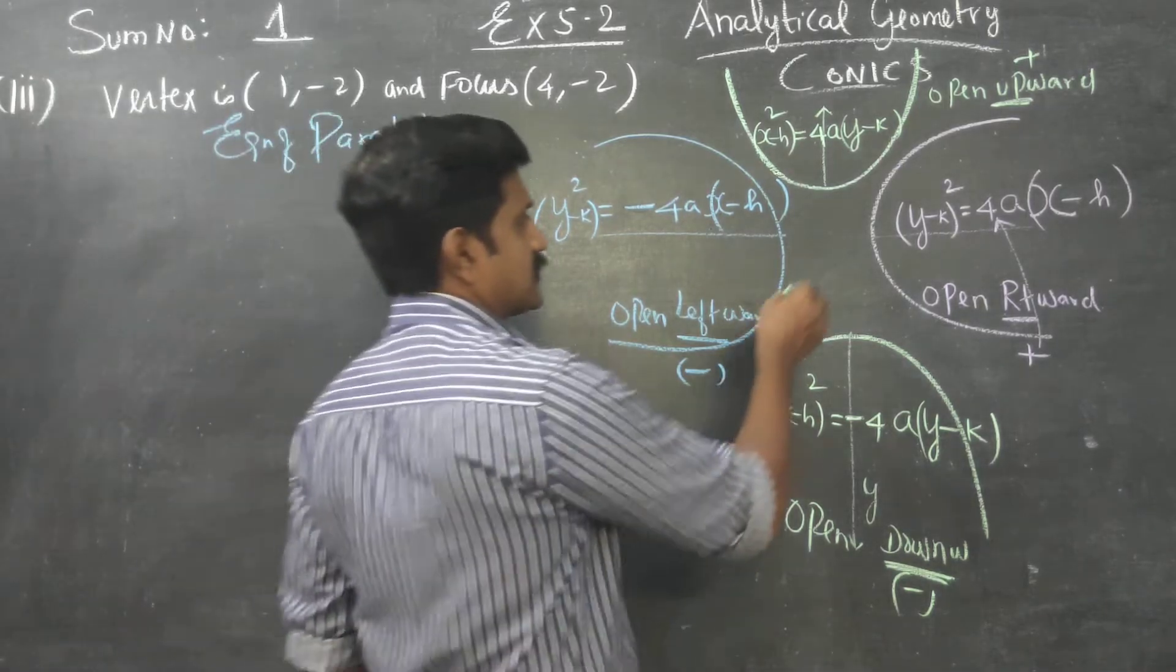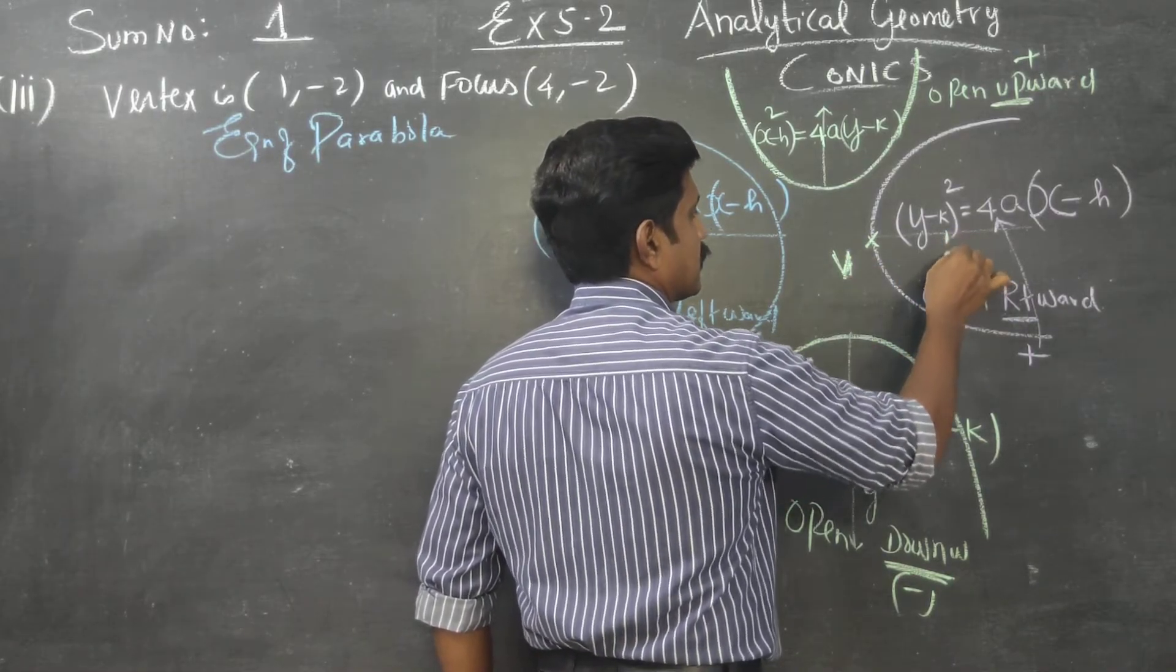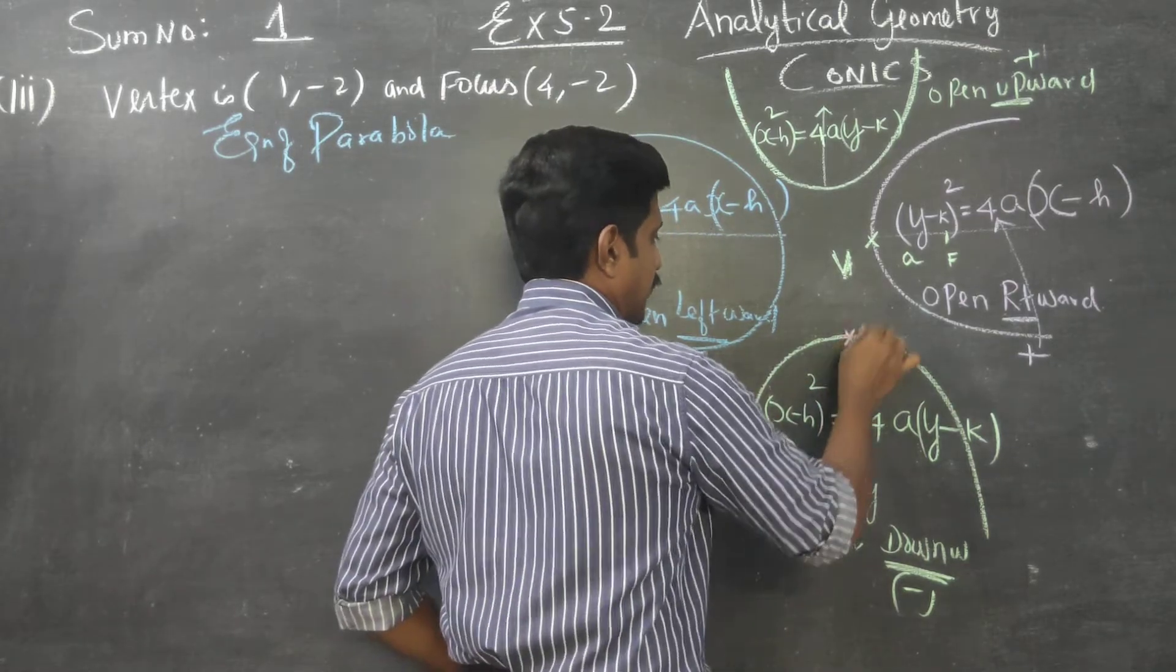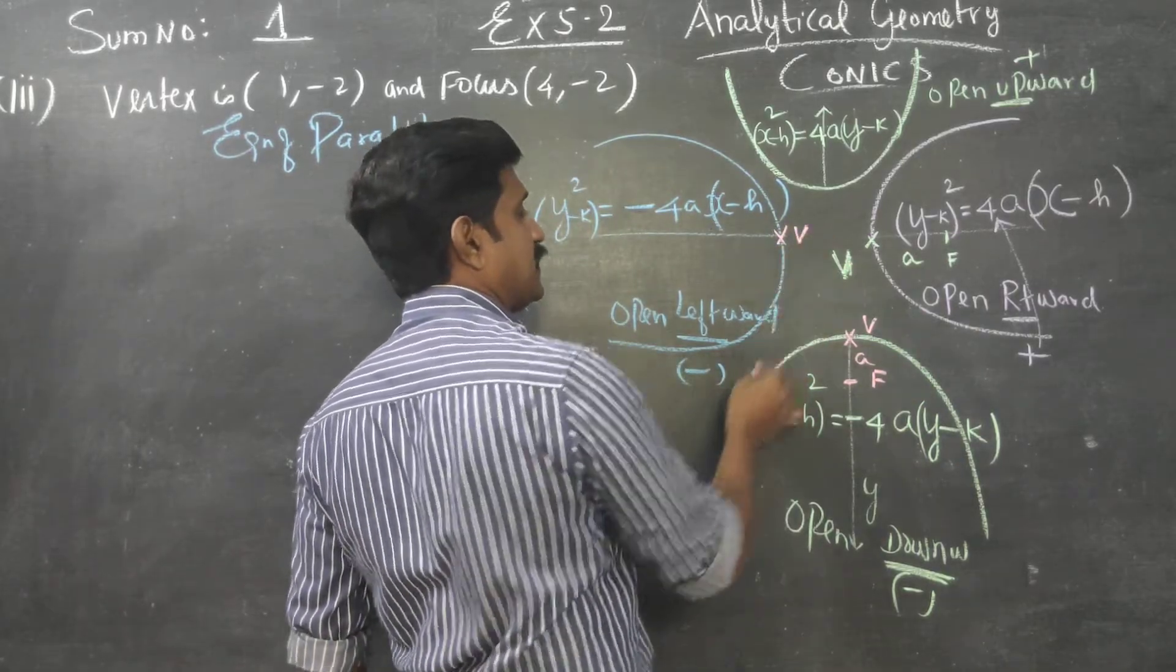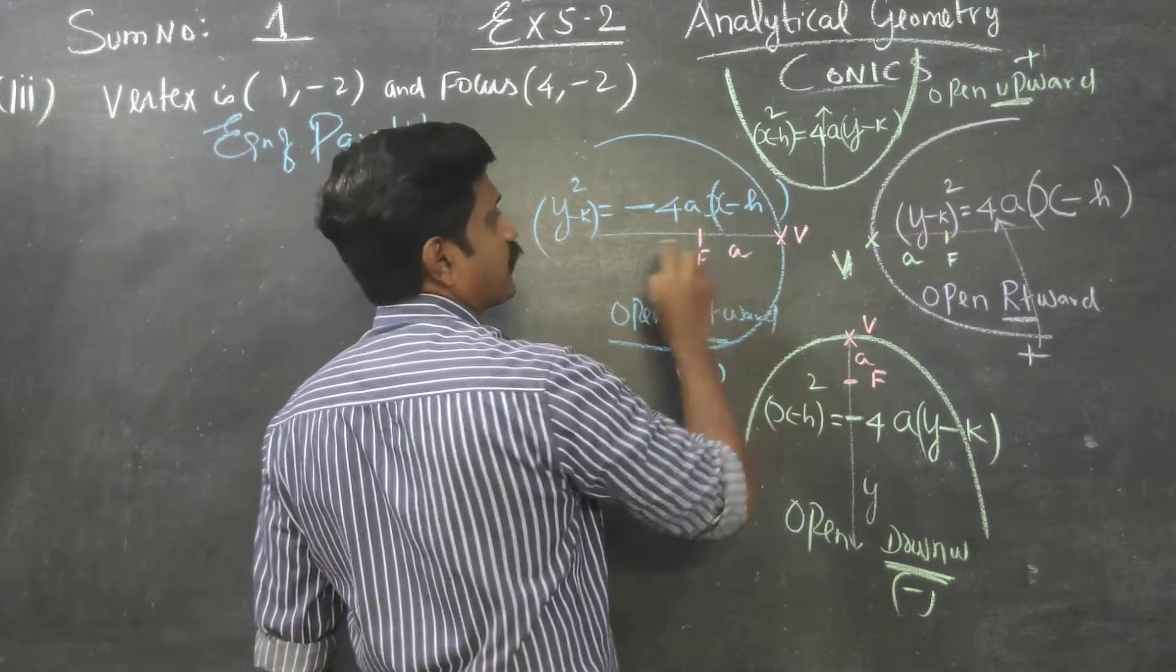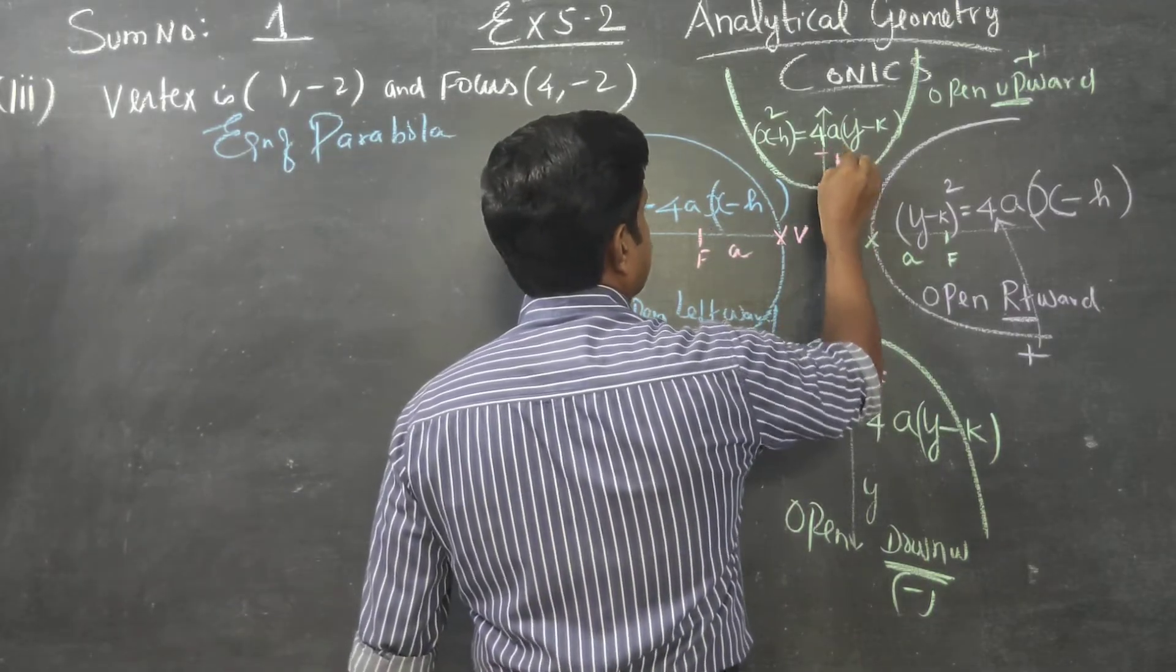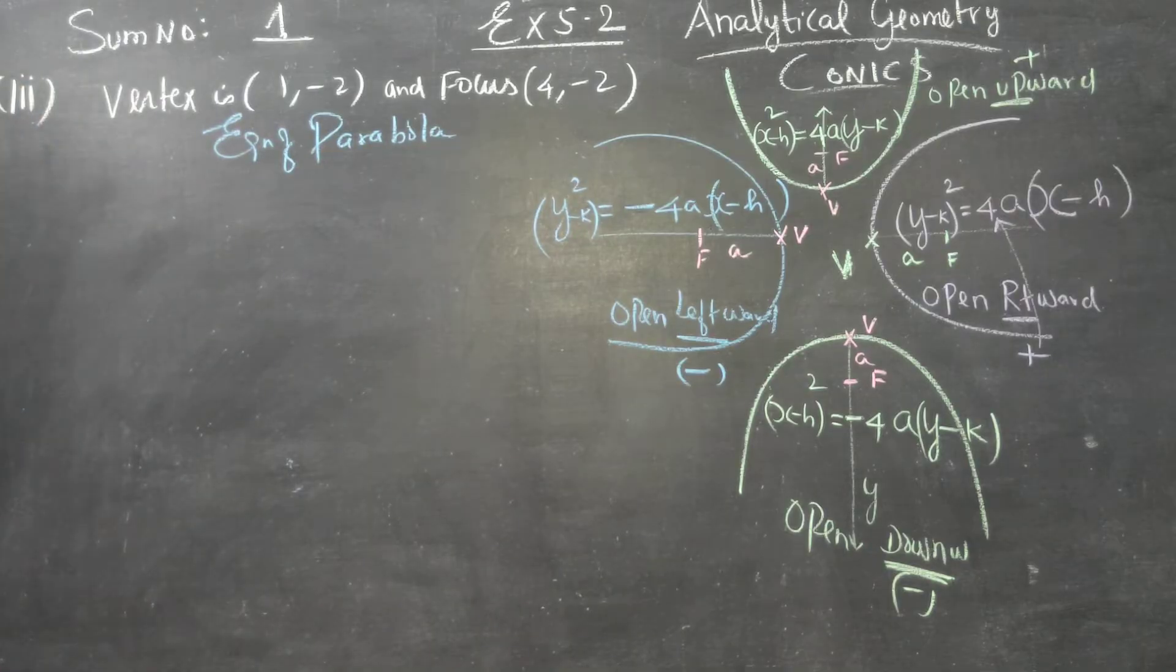The distance between the vertex and focus is called small letter 'a'. Since it is a distance, there is no negative symbol. The distance between vertex and focus is called small letter a.